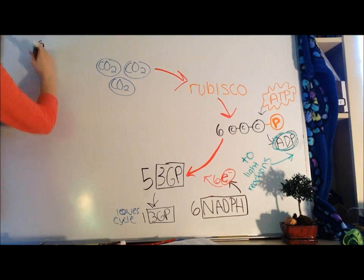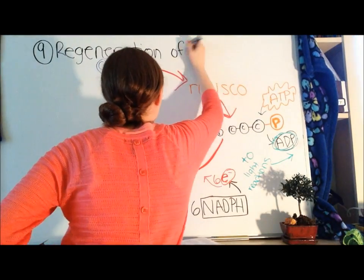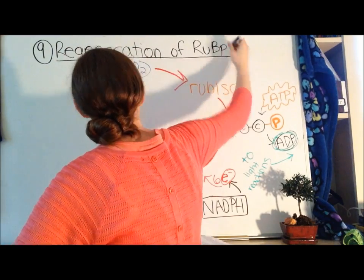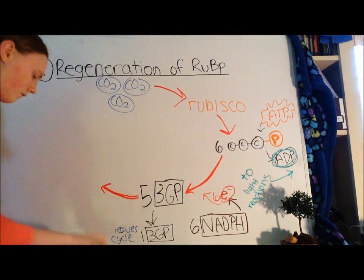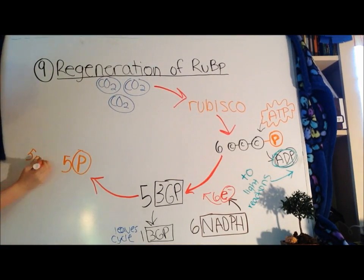Now, the ninth and final step is to regenerate RuBP for the next time around the Calvin cycle. The remaining five molecules of G3P continue on the cycle. Three molecules of ATP each donate one of their phosphates to the five molecules.